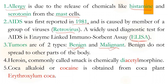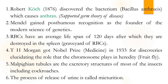Heroin is chemically called diacetylmorphine. Cocaine is developed from the coca plant, also known scientifically as Erythroxylum coca. Robert Koch discovered that the bacterium causes anthrax in 1876, and he supported the germ theory of disease with his findings.